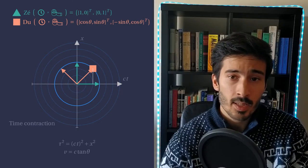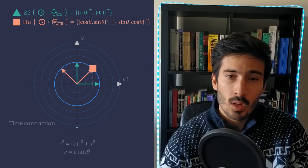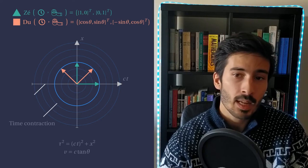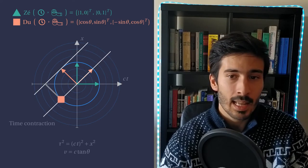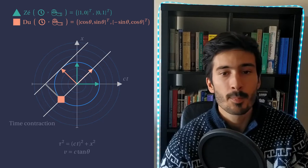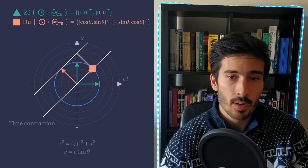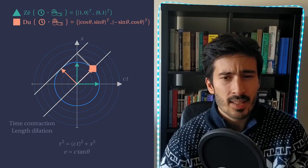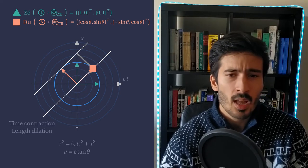In Euclidean space, this makes sense, it is simply Pythagoras' theorem, so we have time contraction. Now, let's imagine that Du is holding a bar of length 1. When he is passing by Ze, what length does Ze measure for the bar? We can see that the bar as being larger than 1. This means that there is length dilation. These effects seem weird and do not agree with our day-to-day observations, but let's continue.